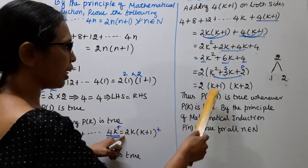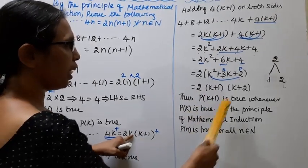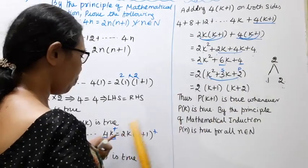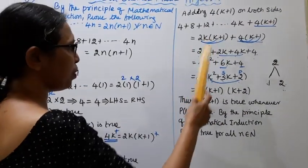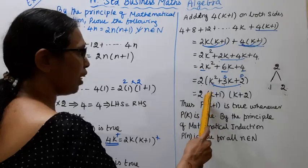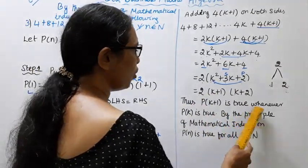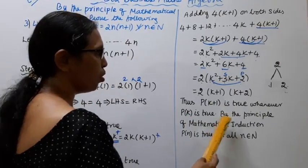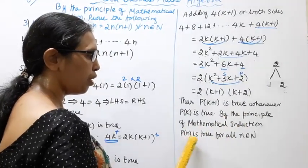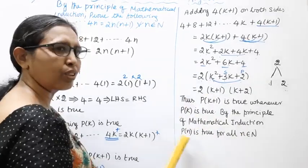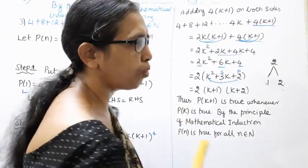= 2(k + 1)(k + 2). This is P(k + 1) with k replaced by k + 1. Thus P(k + 1) is true whenever P(k) is true. By the principle of mathematical induction, P(n) is true for all n belongs to N.